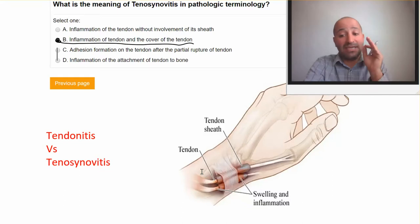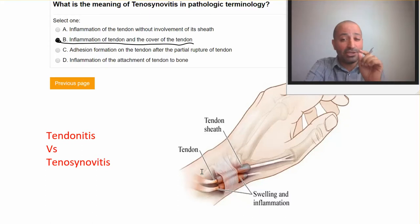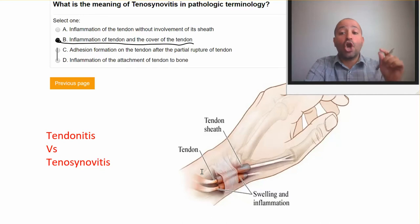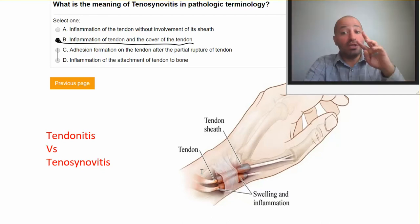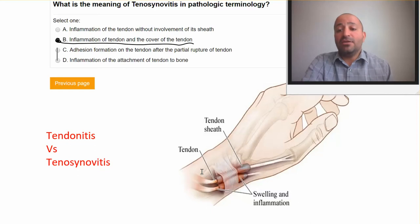Sometimes you don't have tendonitis — you have tenosynovitis. Tenosynovitis means the tendon has inflammation and damage, but more importantly, the damage is happening in the cover or the sheath of the tendon. Usually they occur together, so you have swelling and pain on the tendon and also on the cover of the tendon. The cover of the tendon is called the synovium.